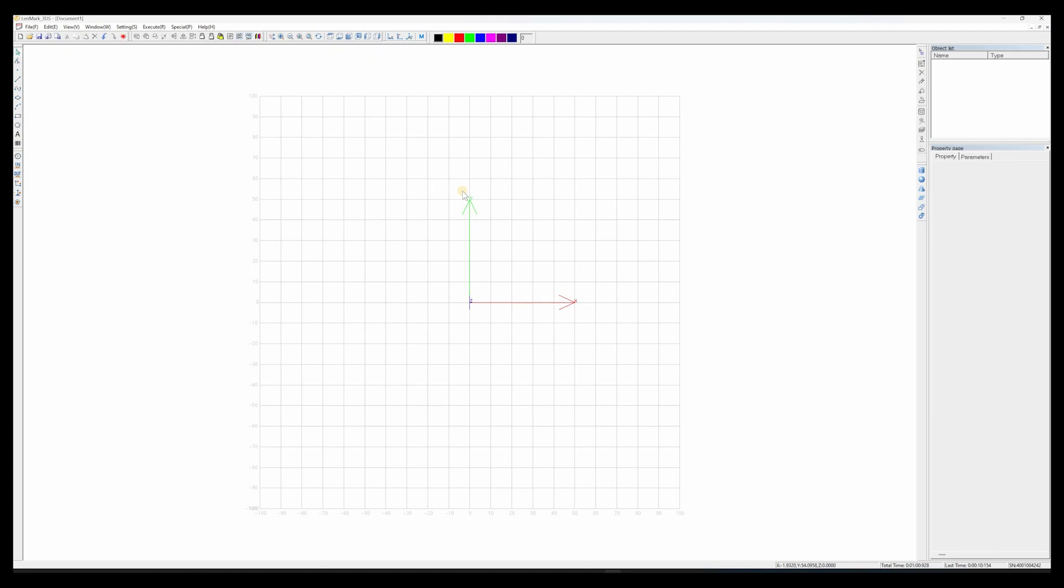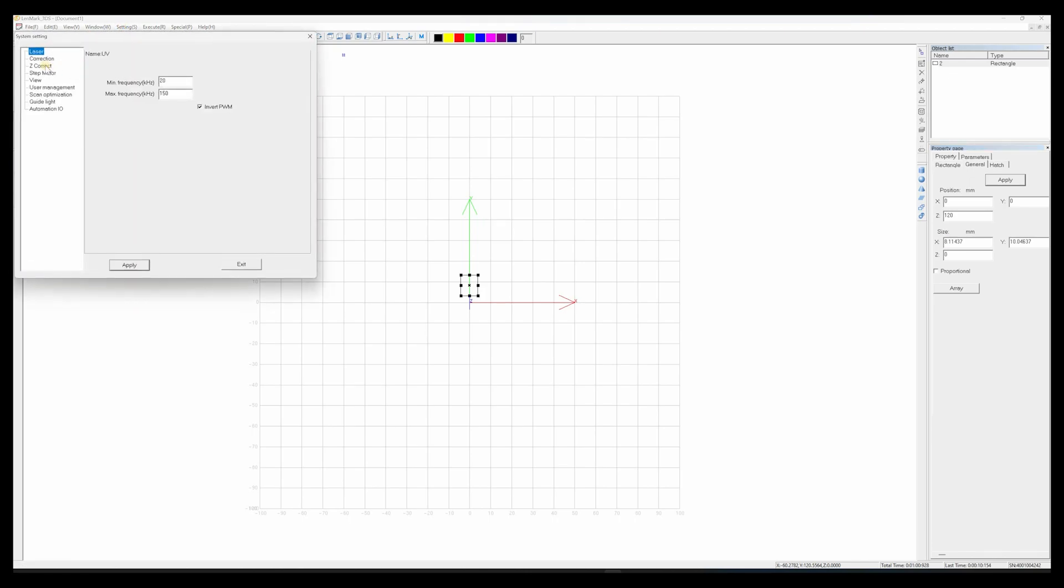So let's start with putting the square. We're going to position it at 00XY, and we're going to move it up to 120 millimeters in working height, which from our correction screen, you can see that our working height is 120 millimeters. So that's what we're going off of today, that's where we're starting.